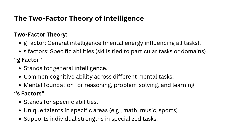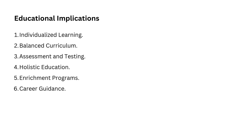Spearman's two-factor theory offers valuable insights for educators. Number one: individualized learning. Since everyone has a different level of general intelligence and specific abilities, teaching strategies should account for individual strengths and weaknesses. For example, some students might excel in math, a high S-factor, while others do well in language. Number two: balanced curriculum. Schools should focus on developing both general intelligence and specific abilities. While foundational skills like reading and problem solving can be taught to all, specialized subjects should cater to specific talents. Number three: assessment and testing.